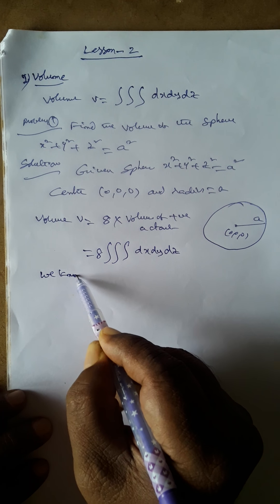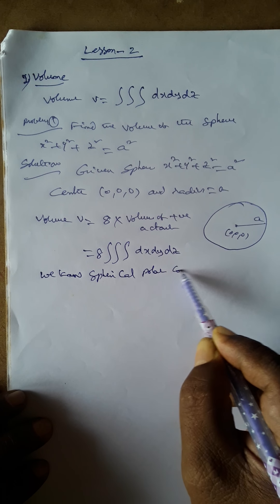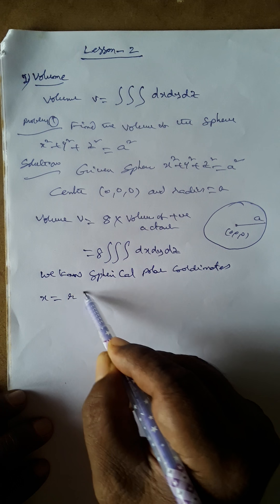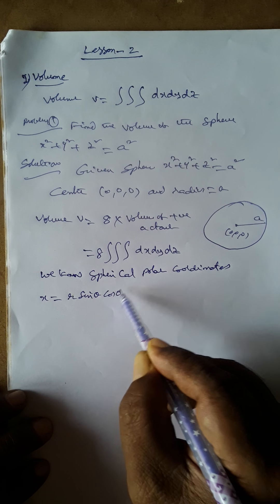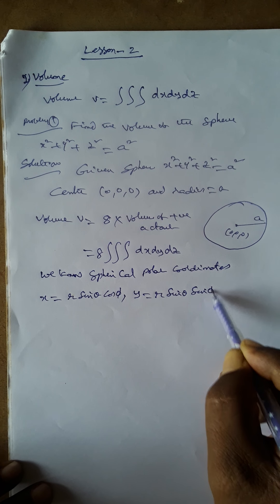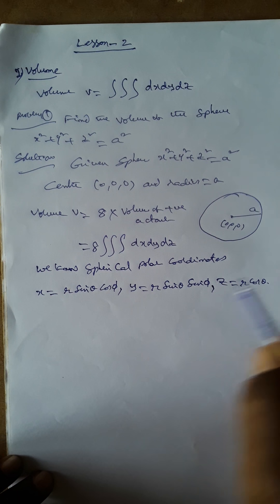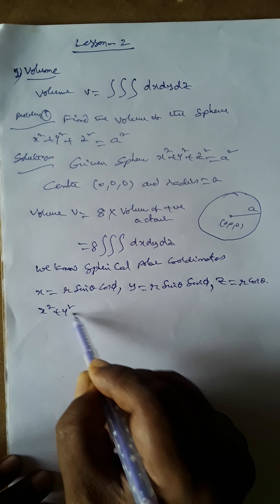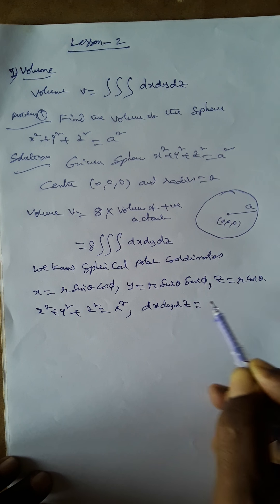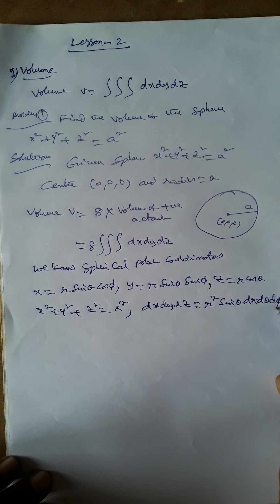We use spherical polar coordinates: x = r sin θ cos φ, y = r sin θ sin φ, z = r cos θ. Here x² + y² + z² = r², and dx dy dz becomes r² sin θ dr dθ dφ.